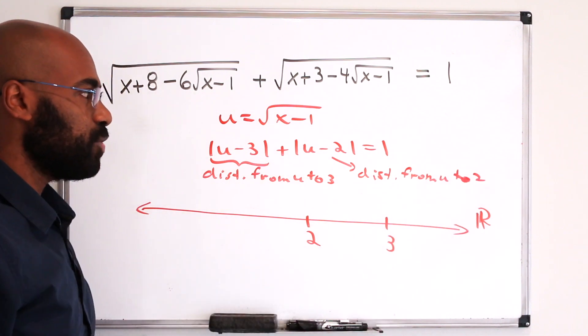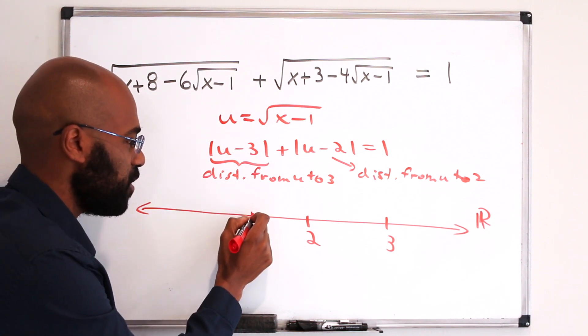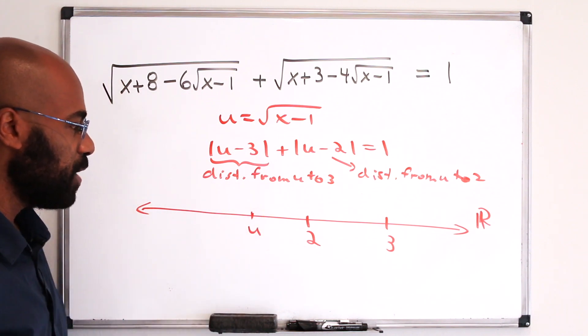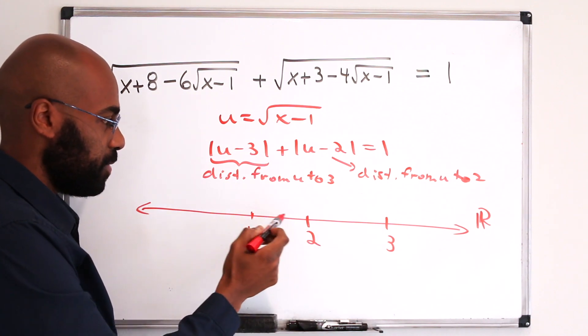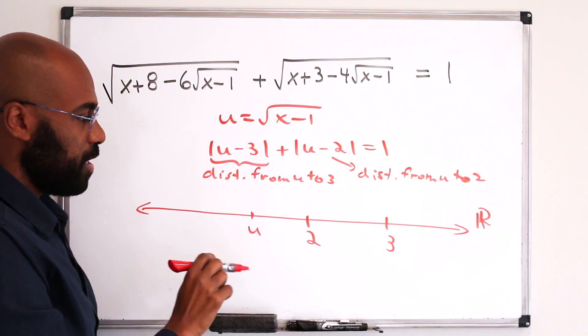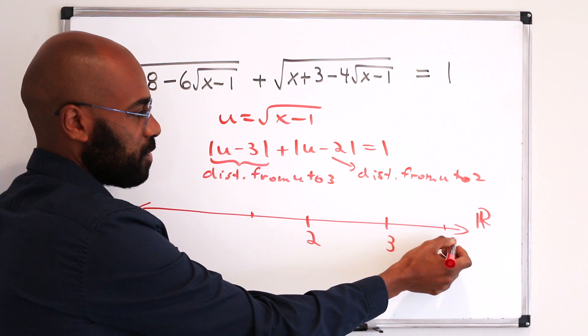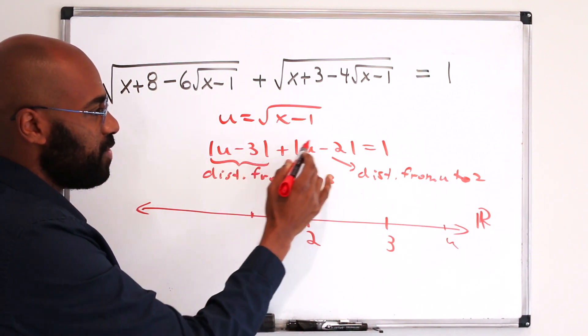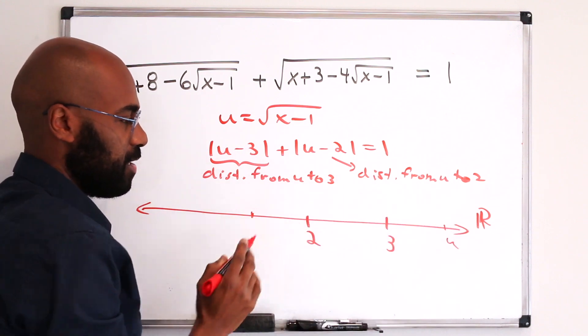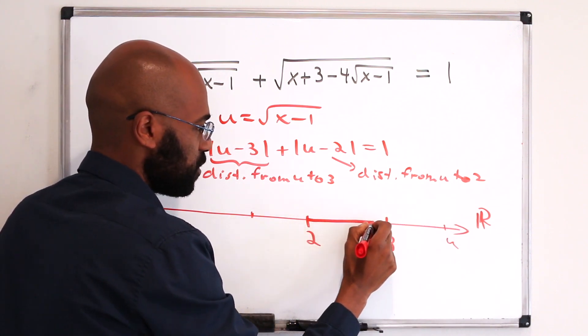So let's analyze when the sum of those distances actually exactly equals 1. So if u was over here somewhere, to the left of 2, then its distance from 3 would be actually strictly greater than 1, because the number is less than 2. So we don't have any solutions there whatsoever. And if u was over here, its distance from 2 is strictly greater than 1. So we don't have any solutions to this in that region as well. So the only possible places we have solutions are right over here.